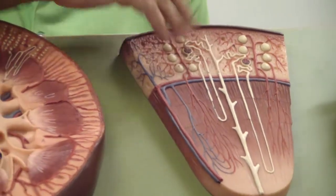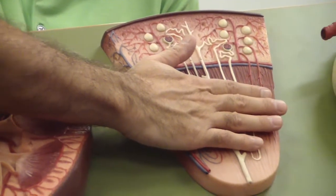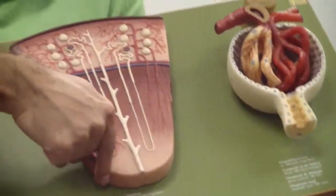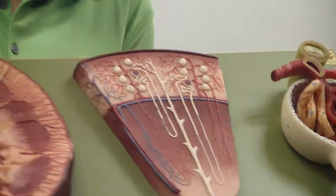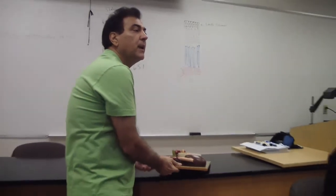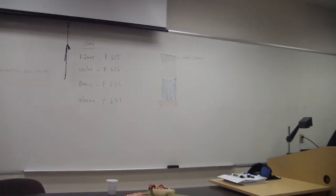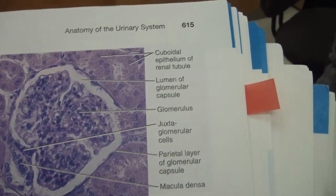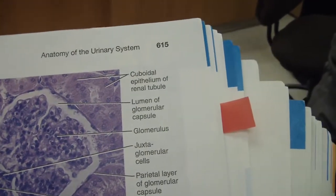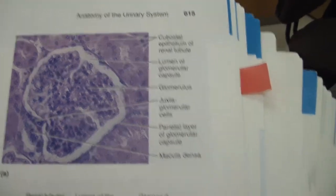Here's the capsule, here's the cortex, and here's the medulla with the medullary pyramids. If you look at the slide, take a look at the picture — one of the pictures is showing you a few of those renal corpuscles. A few of those renal corpuscles.